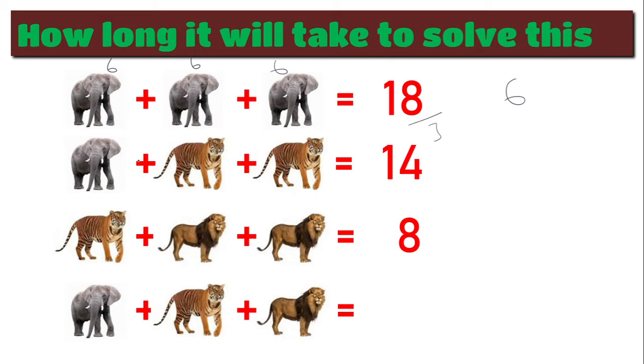Next one is two tigers plus one elephant, which equals 14. Now we already know the elephant is 6. So if you minus 6 from 14, what you will get is 8. Therefore you can divide by 2 tigers. So each one will be 4. So 4 plus 6 plus 4 equals 14.